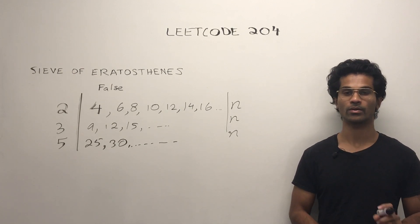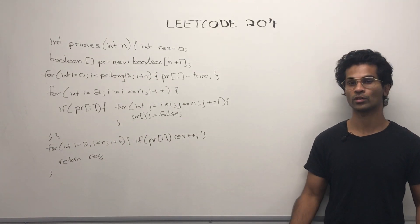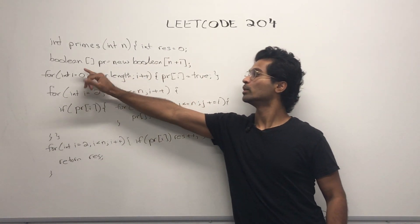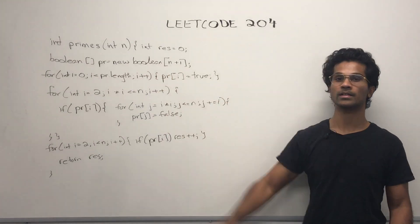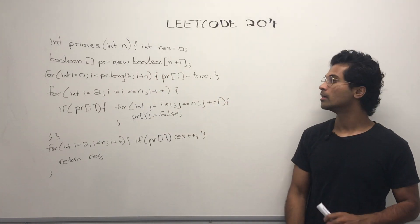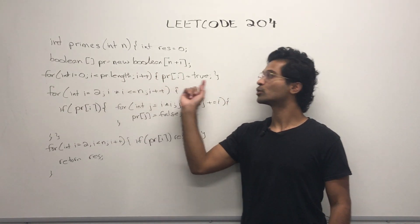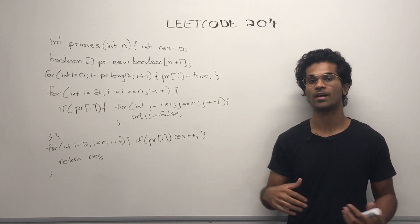Now let's look at the code. First, we initialize our result counter. Then we initialize a boolean array of size n plus 1. Then we set it all to true because first we're assuming that everything is prime.